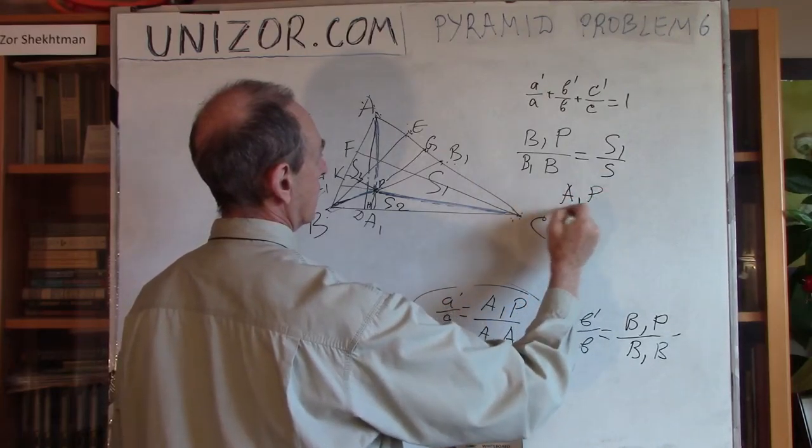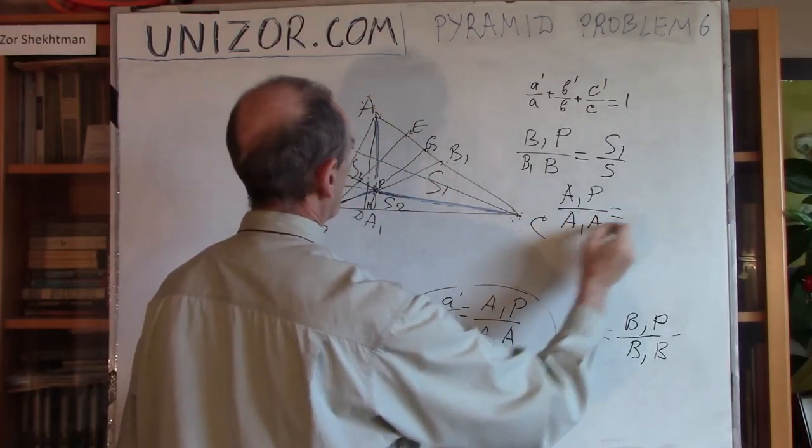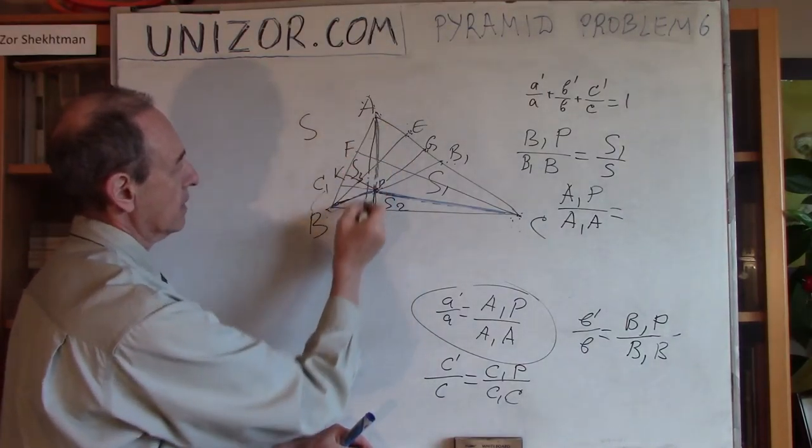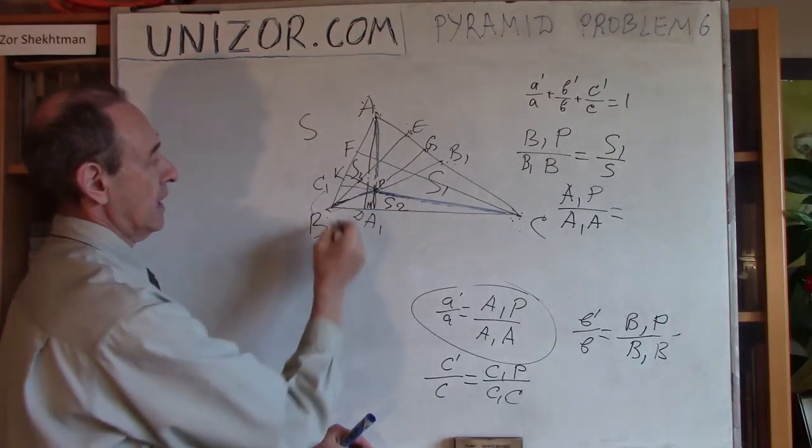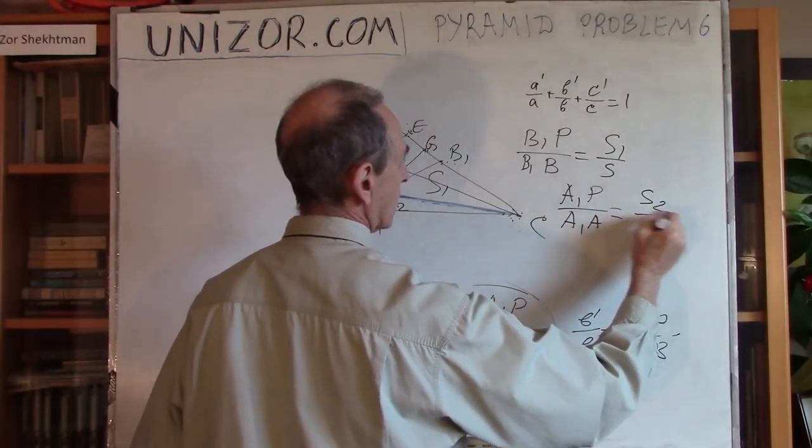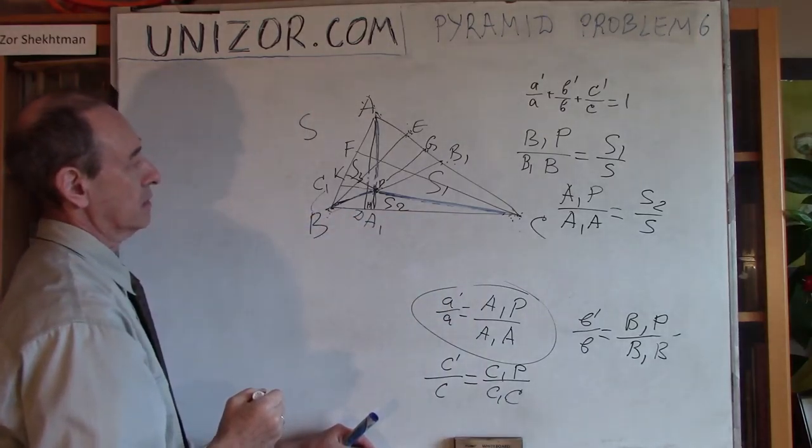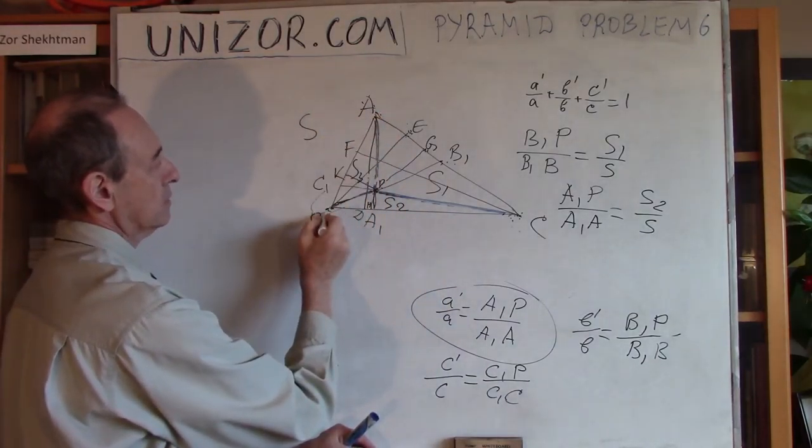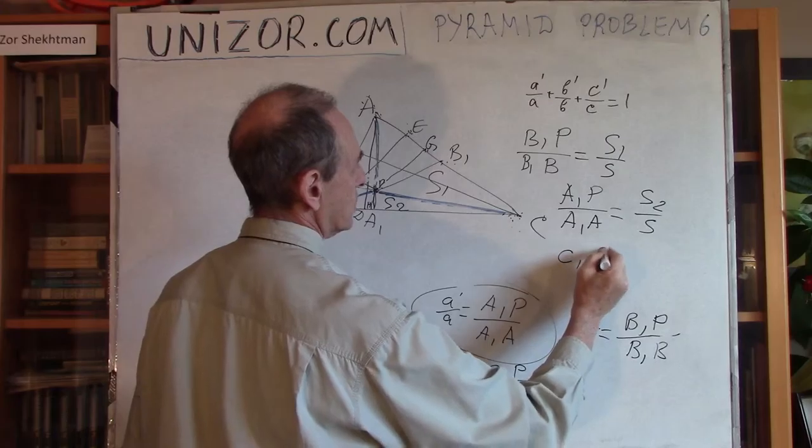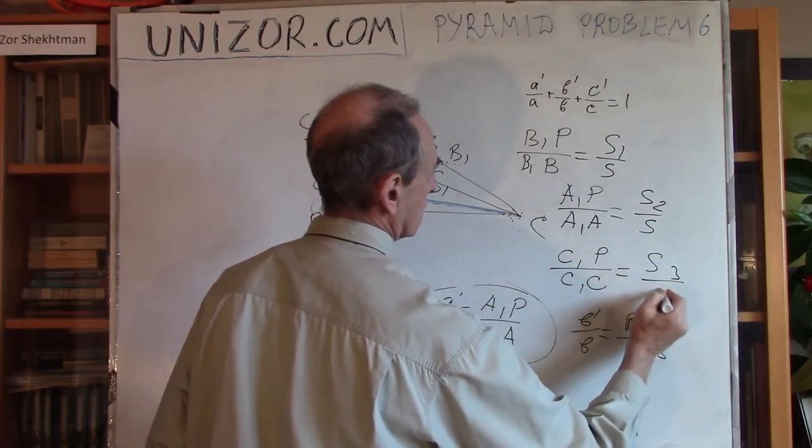And similarly A1P divided by A1A would be the ratio between altitude of this triangle divided by altitude of the bigger triangle. They have the same base so it will be S2 divided by S where S2 is area of this small triangle.